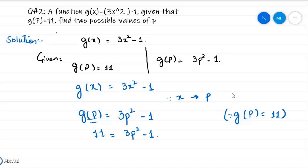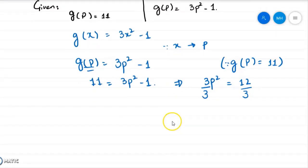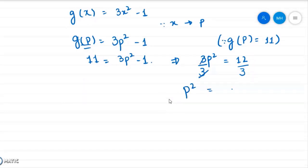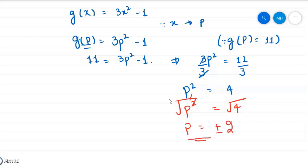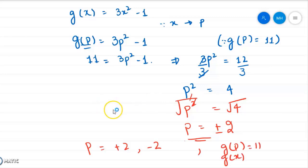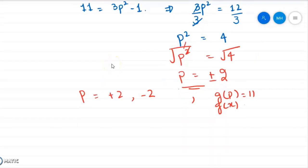Now it is a quadratic equation. Add 1 on both sides: 3p squared equal to 12. Divide both sides by 3: p squared equal to 4. Now whenever you take the square root of that value, you get two values — one positive and one negative. So the values for p are either 2 or minus 2, both of which satisfy the condition g of p equal to 11, where g of x equal to 3x squared minus 1.